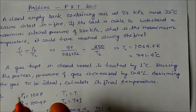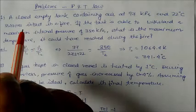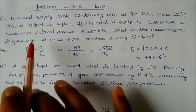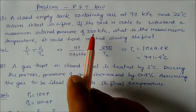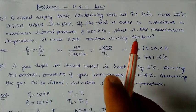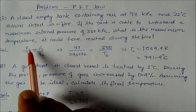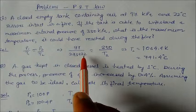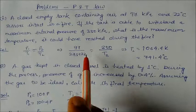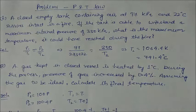Now let's see a problem based on pressure-temperature law. A closed tank containing air at 97 kPa and 22°C survives intact in a fire. If the tank can withstand maximum internal pressure of 350 kPa, what is the maximum temperature it could have reached? Using pressure-temperature law, P₁/T₁ = P₂/T₂. P₁ is 97, T₁ is 273 + 22 = 295. P₂ is 350, T₂ = unknown. Solving, T₂ = (350 × 295)/97 = 1064.5 K. In centigrade, 1064.5 - 273 = 791.5°C.